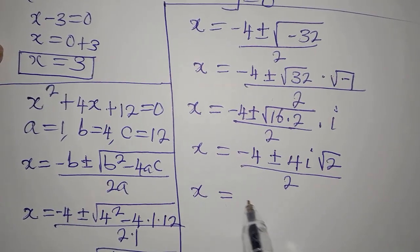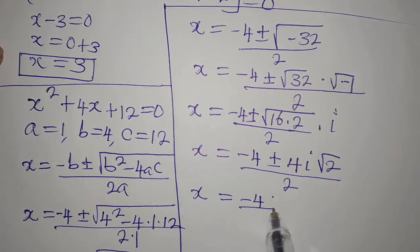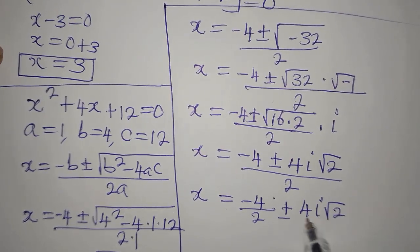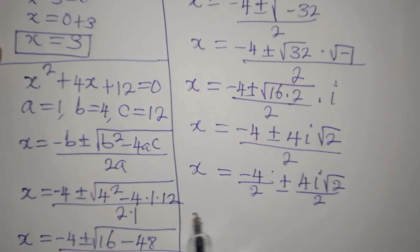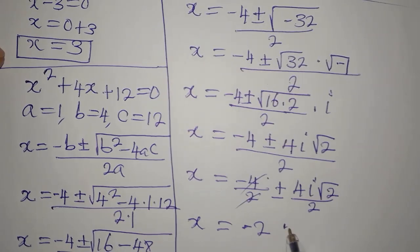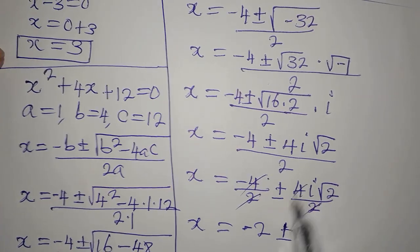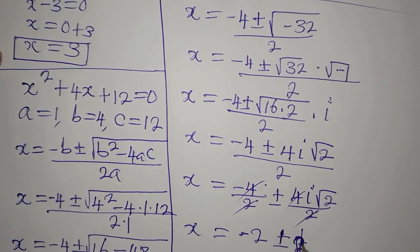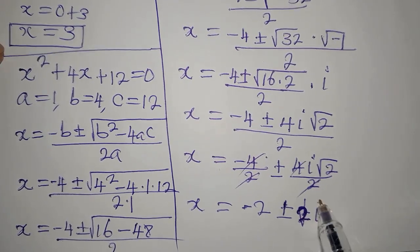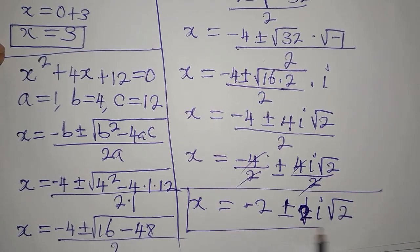Continuing, we have x equals minus 4 over 2 plus or minus 4i√2 over 2, which simplifies to x equals minus 2 plus or minus 2i√2. This is the solution from the quadratic equation, giving us two solutions in one.